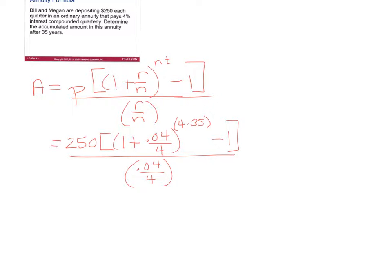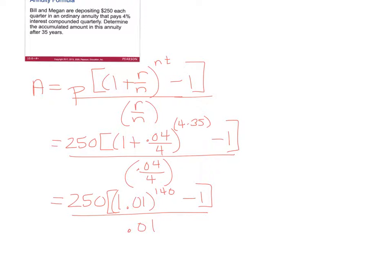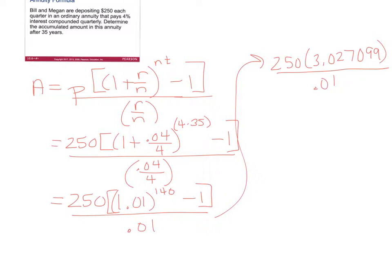When you go through to do this by hand, I would recommend doing the innermost parentheses first. Take 0.04 and divide it by 4 to get 0.01. Take 4 times 35 to get 140. Then take 1.01 raised to the 40th power and subtract 1. You'll have 250 times 3.027099 all over 0.01. That gives approximately $75,677.48. So after 35 years of $250 each quarter, they will have $75,677.48 in their account.